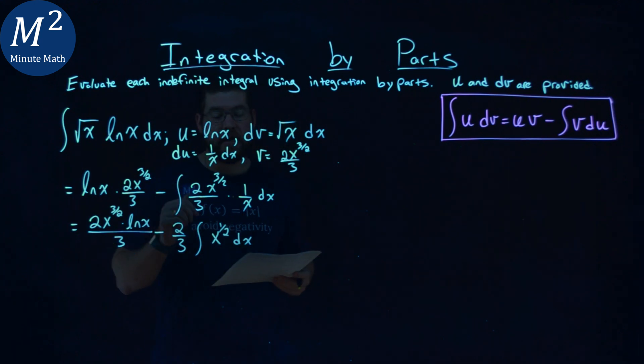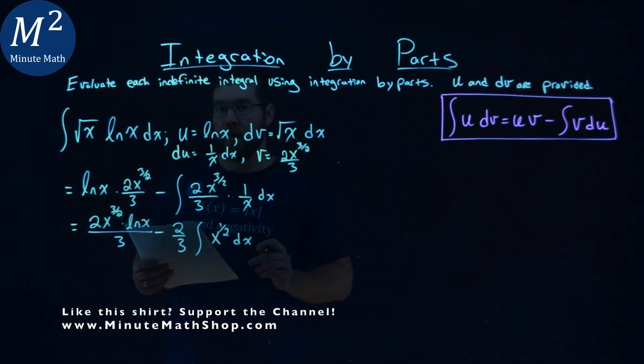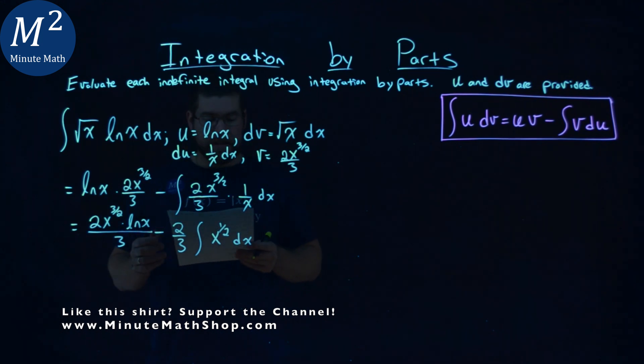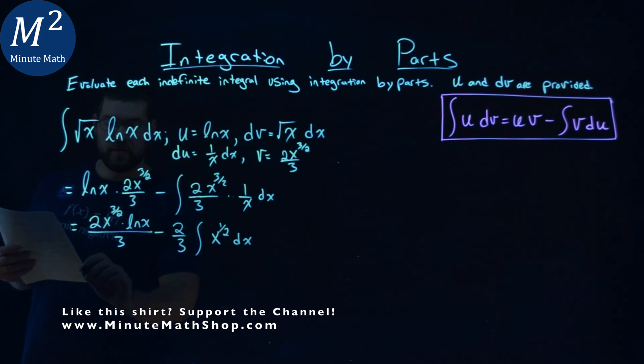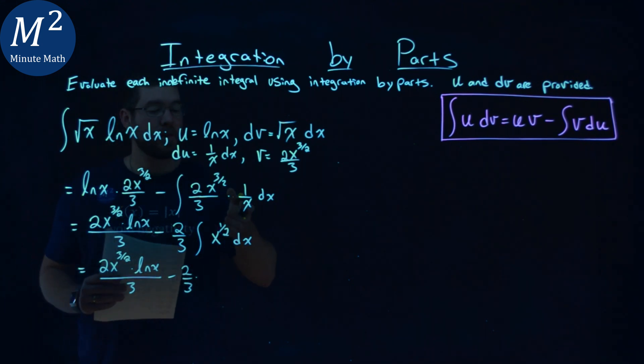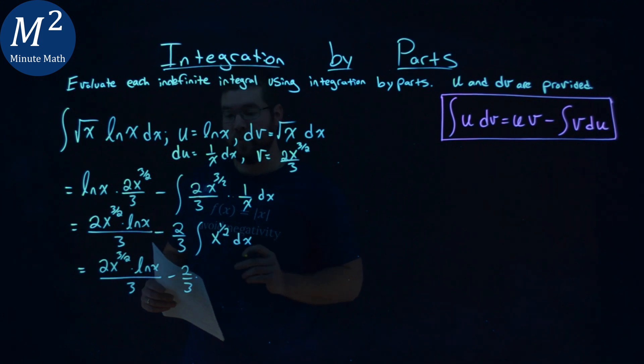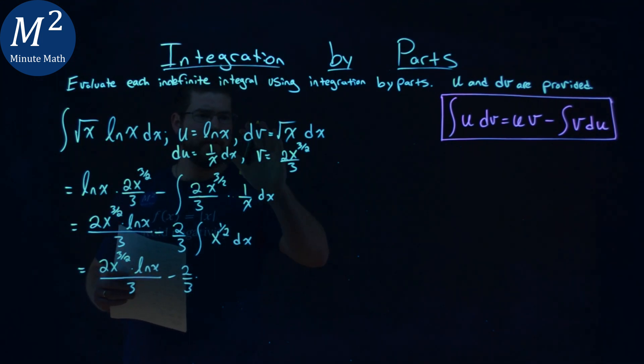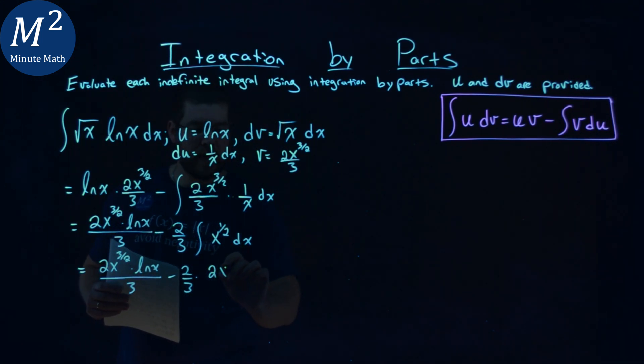And this actually makes it a lot easier, right? Because remember, x to the 1 half power is the same as the square root of x. So, continuing on, we need to keep going. This stays the same, we keep it out here, 2 x to the 3 halves times natural log of x over 3, minus 2 thirds times the integral of x to the 1 half power, which we already found. Hard work's already done in the beginning. We have 2 x to the 3 halves power over 3, plus c. Don't forget the plus c.